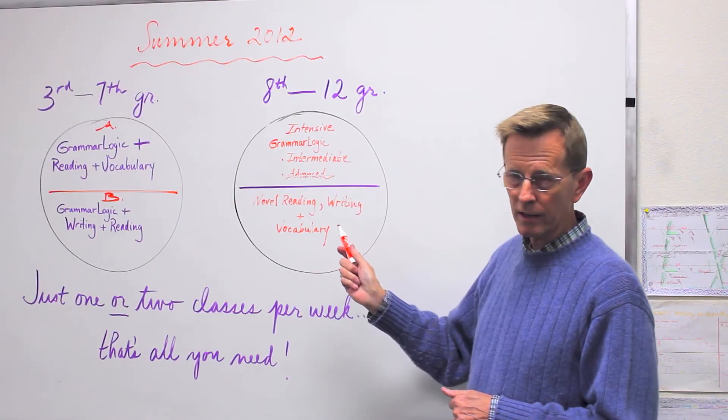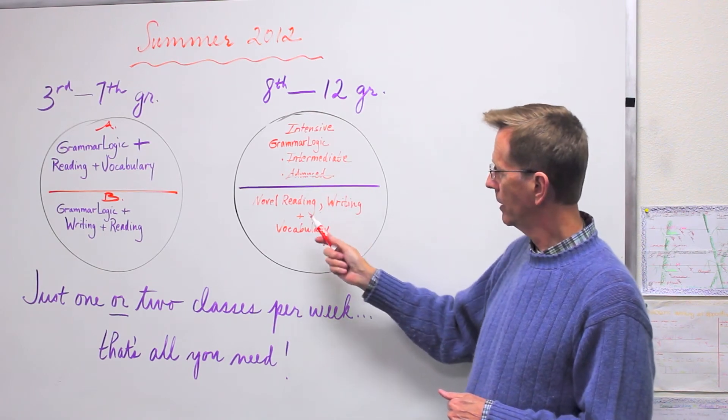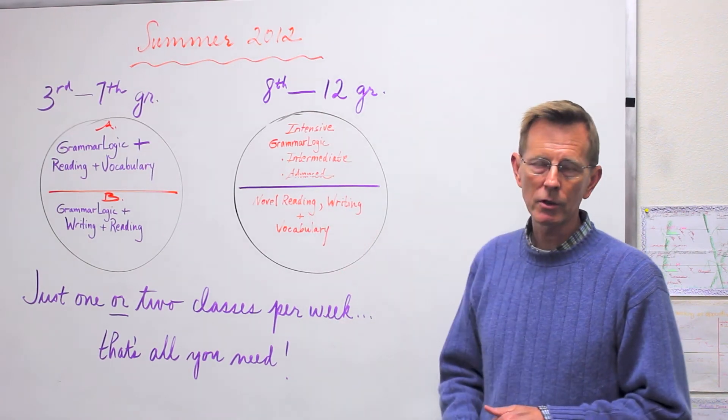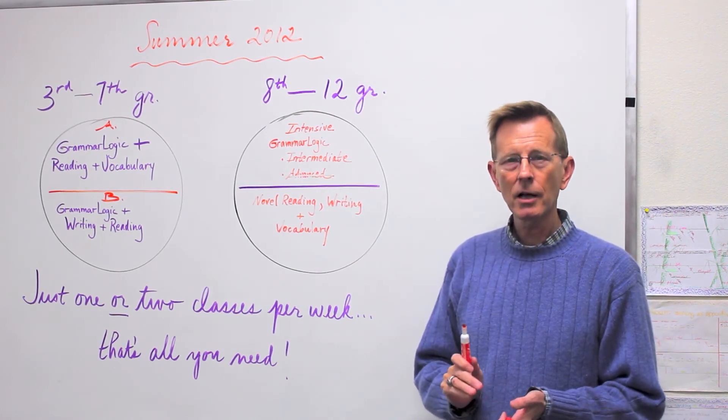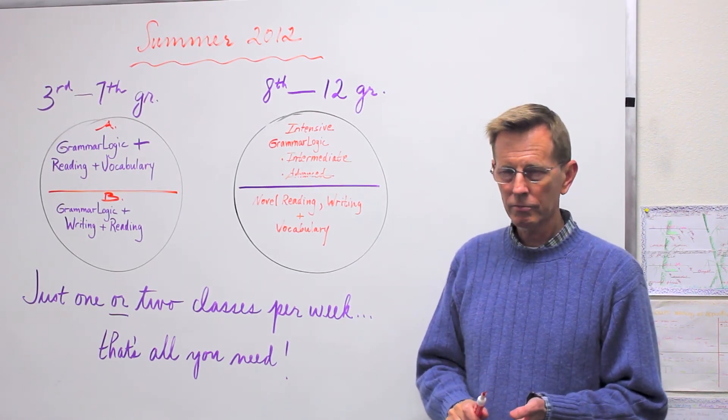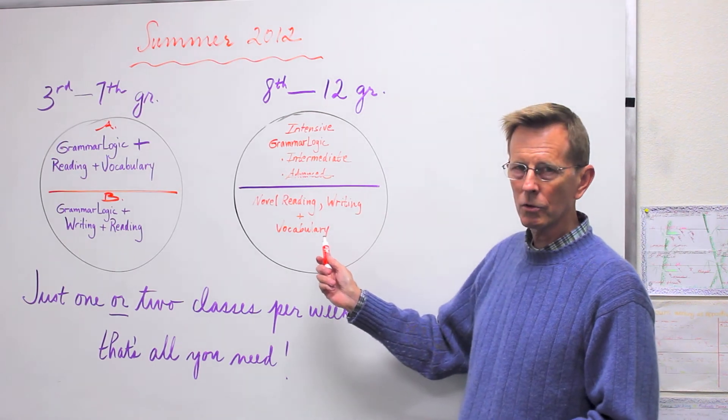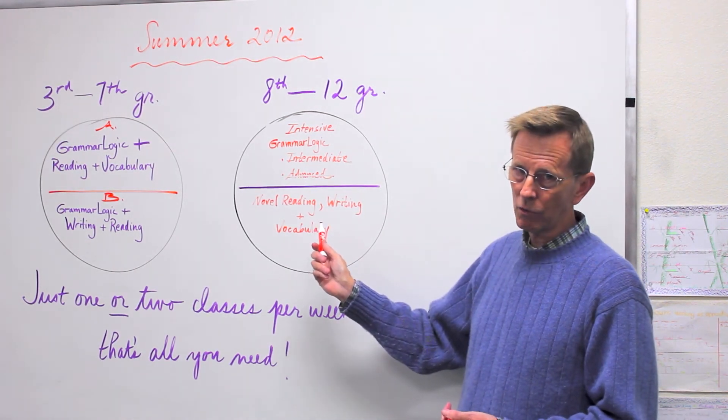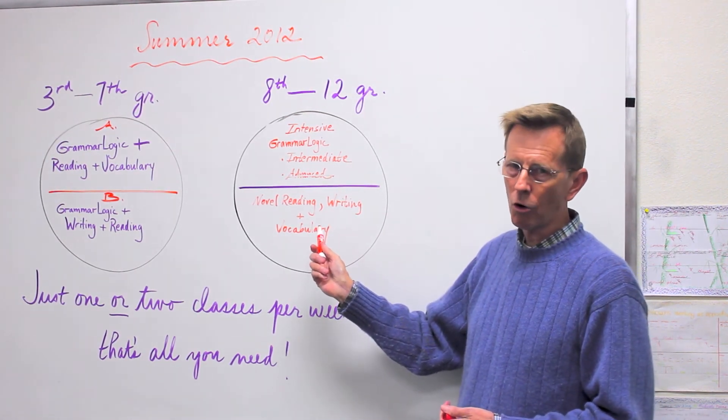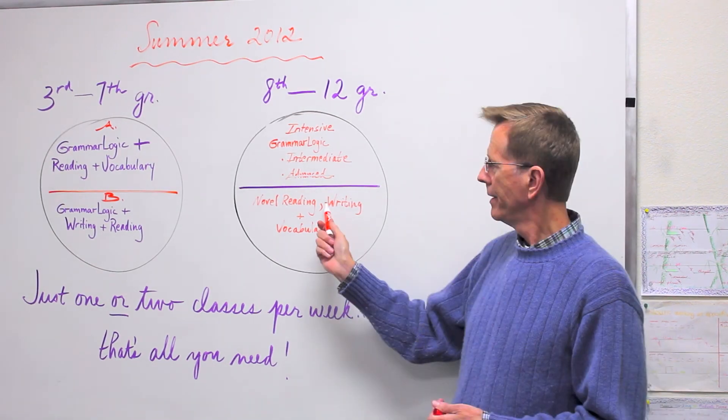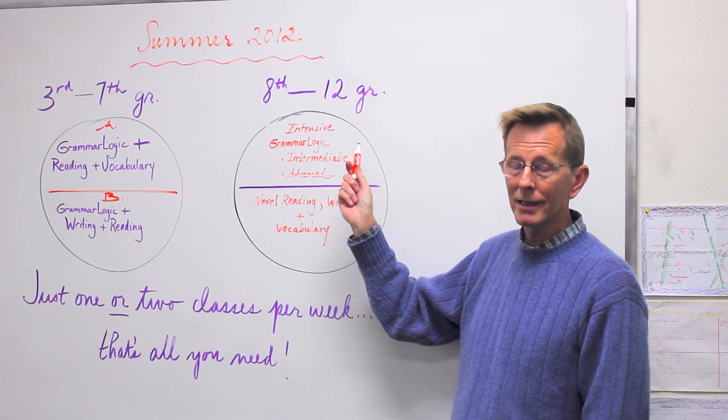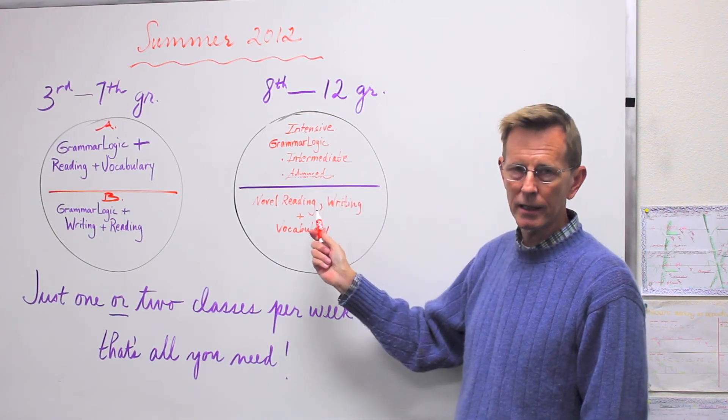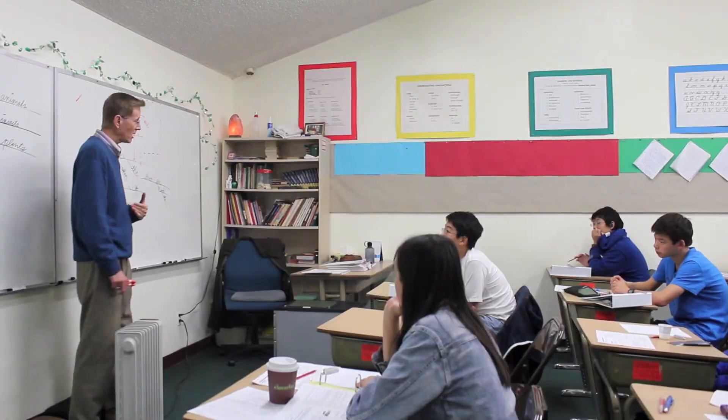The second class which is available is a novel reading, writing, and vocabulary class. There is a class for 8th and 9th graders and a class for 10th and 11th graders. This class is available at the 9th and 10th grade level only to students who have already taken intensive grammar logic. If your student takes intensive grammar logic in the summer, he or she may take this writing class at the same time.